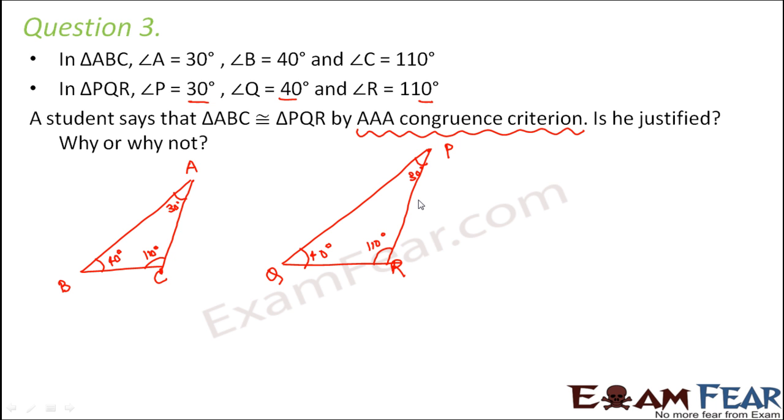But the question is, why don't we have something like AAA congruence criteria? Why is it that when all the three sides of a triangle are equal, then the two triangles are congruent, but when all the three angles of two triangles are equal, then why the two triangles are not congruent? Let me explain this. In this case itself, you see that triangle ABC is smaller in size than triangle PQR, but still they have the same angles. So even with the same angles, even if all the three angles are same, you can alter the size of the triangle. The moment you alter the size of two triangles, they will no more be congruent because congruence is all about shape and size.